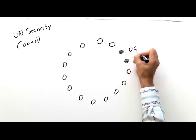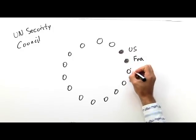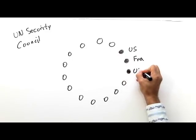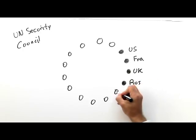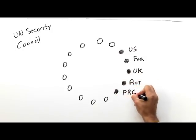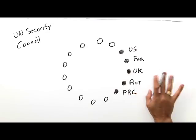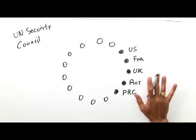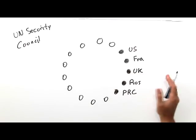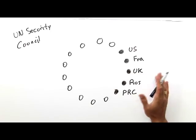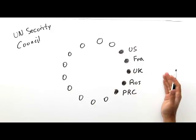Those five are the United States, France, the United Kingdom, Russia, and the People's Republic of China. Those five countries are the permanent members of the UN Security Council, or the so-called P5, and they all have a veto, which is why they are sometimes called the veto-wielding members of the Council.